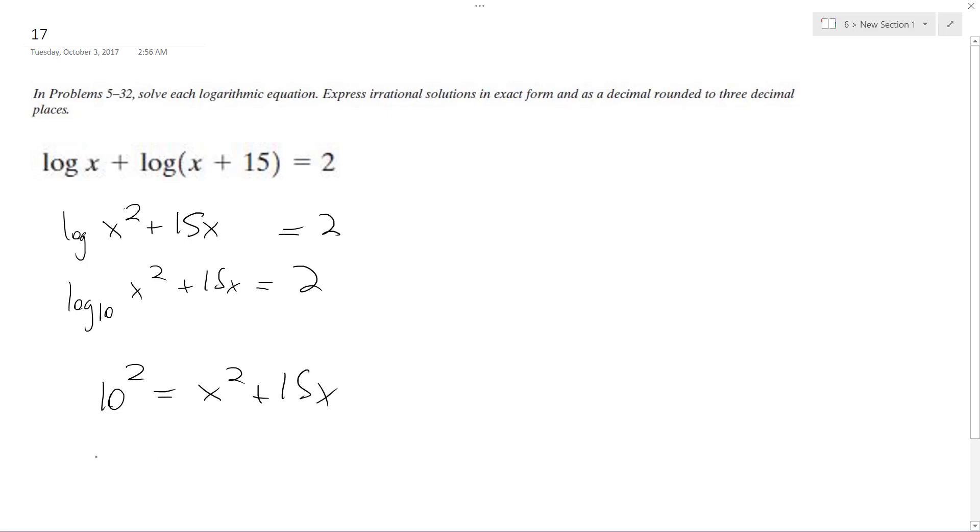So then we get 100. I can subtract 100 from that side, so I get x squared plus 15x minus 100 equals 0.